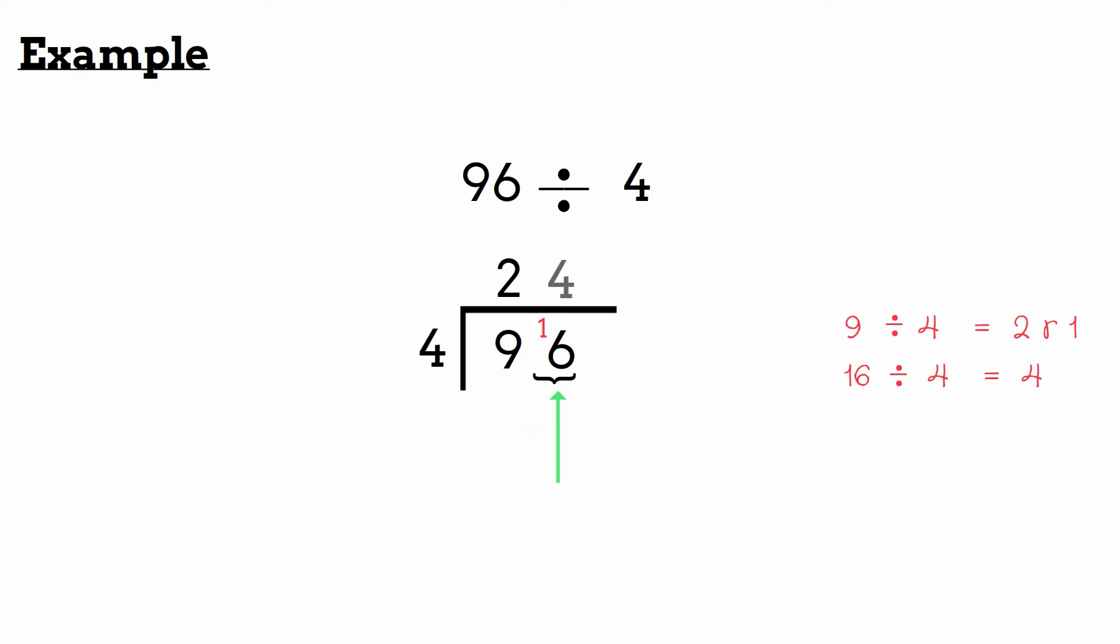And that's it! Our answer is 24. 96 divided by 4 equals 24. Just one thing to note before we continue: whenever we have no remainders left, then we've come to the end of the division problem.